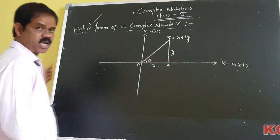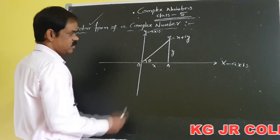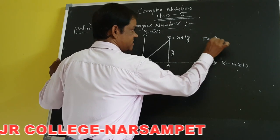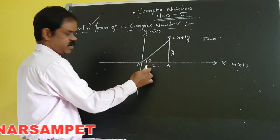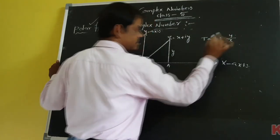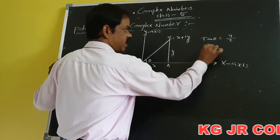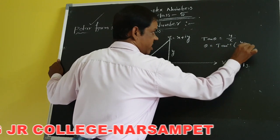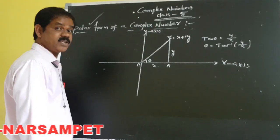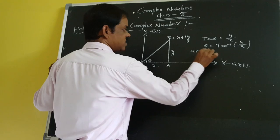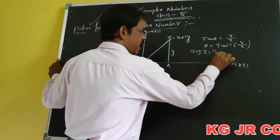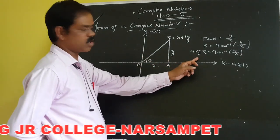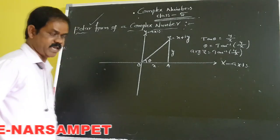According to the first quadrant — observe this figure — in the first quadrant, we can write tan θ equals opposite side over adjacent side, that means Y by X. So θ equals, shifting tan to the right-hand side, tan inverse of Y by X. θ is nothing but the argument of Z. Therefore, in the first quadrant, the argument of Z equals tan inverse of Y by X.